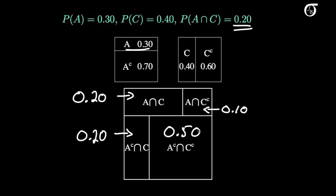Things get a little more complicated when events are not independent. In probability and statistics, it's often much easier to deal with situations when events are independent than when they are not.